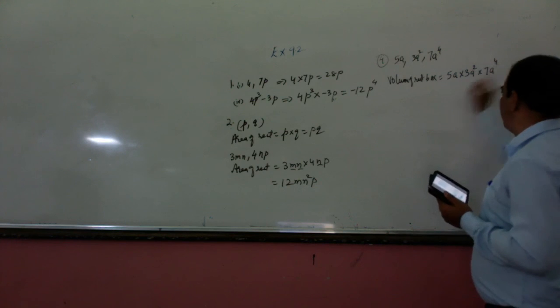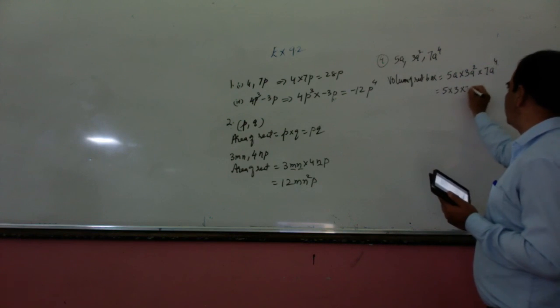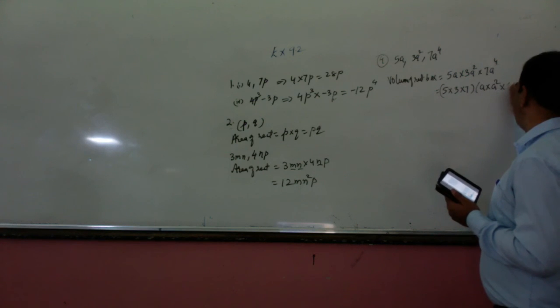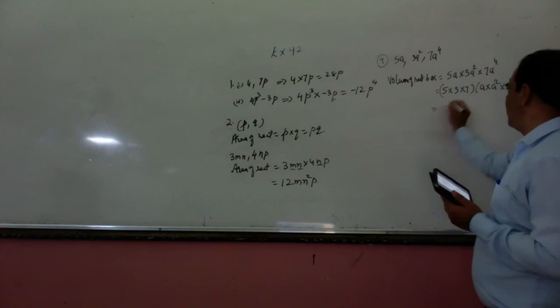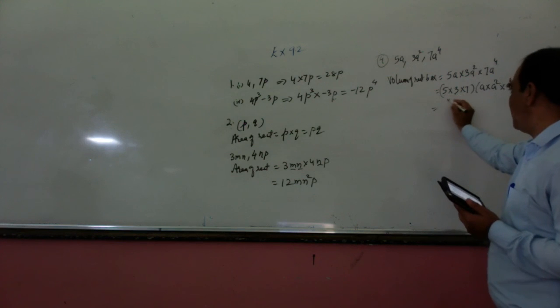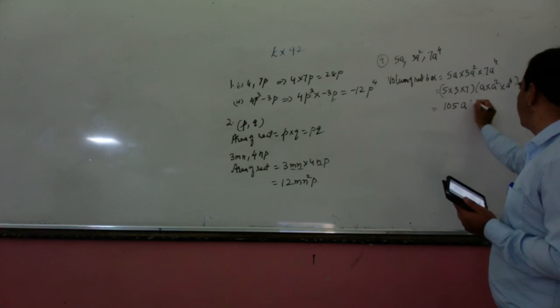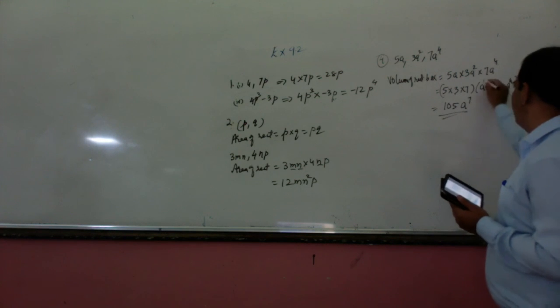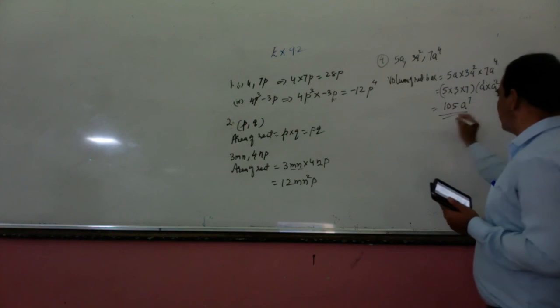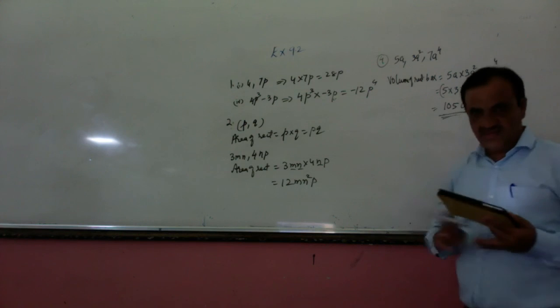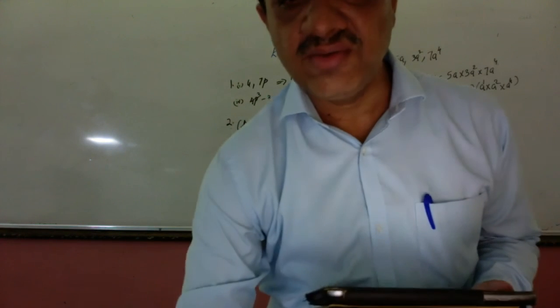So you can write, the constants come: 5 into 3 into 7. Now here, a into a square into a⁴. So it will be 15, 15 into 7 is 105. And here, a to power 7, because 1 plus 2 plus 4 is 7. The remaining you can do on your own.